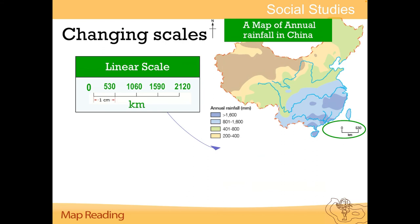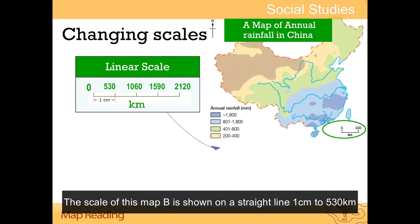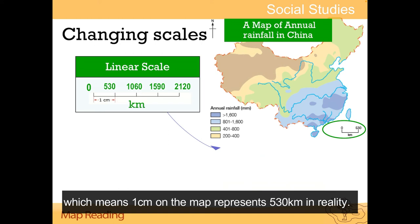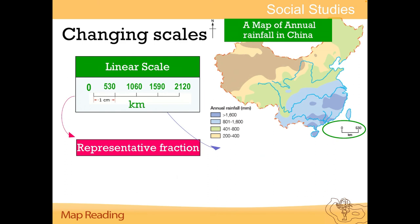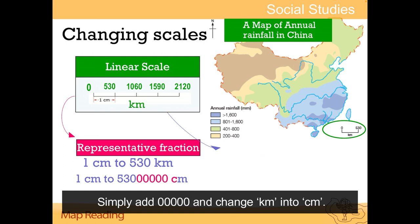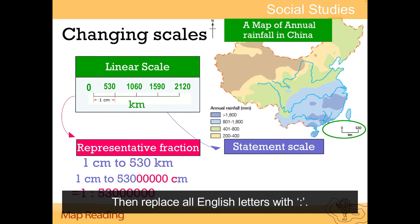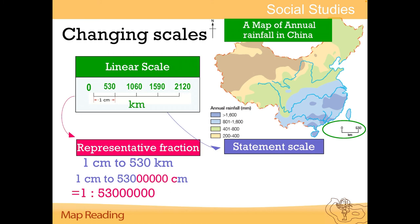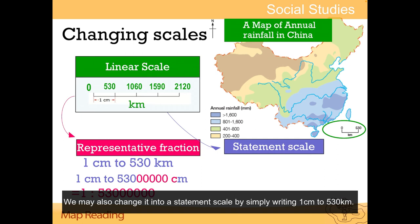The scale of this map is shown in a straight line: 1 cm to 530 km, which means 1 cm on the map represents 530 km in reality. We may change it into a representative fraction by adding five zeros and changing km into cm, then replacing all English letters with a colon. We may also change it into a statement scale by simply writing '1 cm to 530 km'.